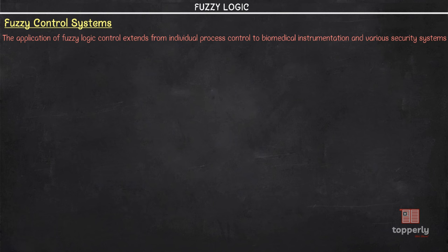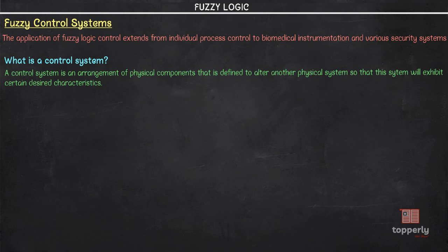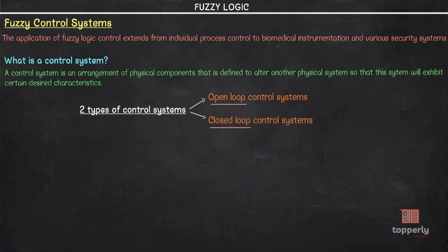Now, what exactly is a control system? A control system is an arrangement of physical components that we use to alter another physical system so that that physical system will exhibit certain desired characteristics. We have two types of control systems.